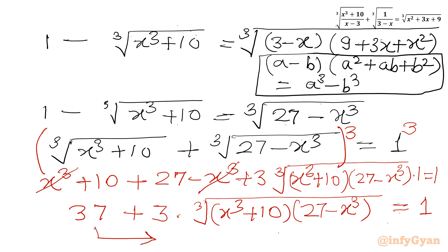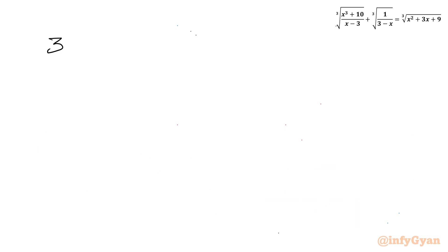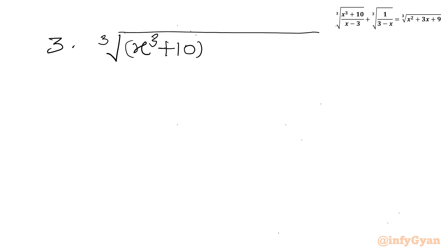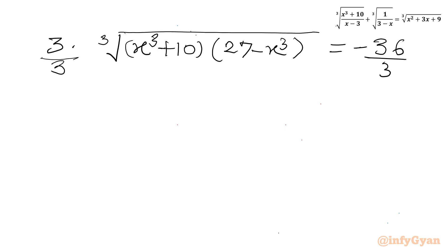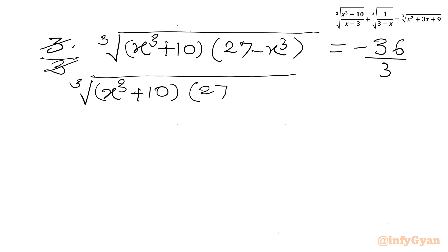Taking 37 to the right-hand side gives 3 times cube root of [(x³ + 10)(27 − x³)] = 1 − 37 = −36. Dividing both sides by 3 gives: cube root of [(x³ + 10)(27 − x³)] = −12.